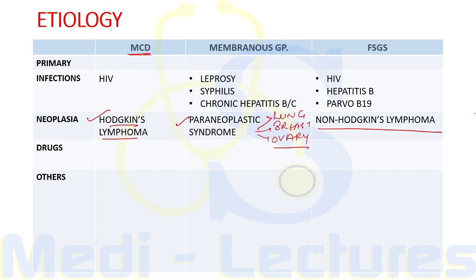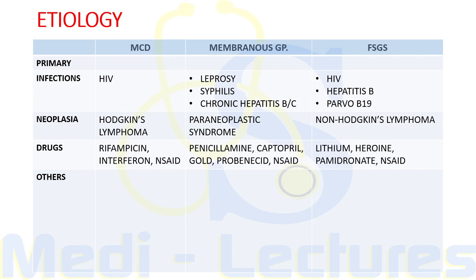Non-Hodgkin's lymphoma is associated with FSGS. Coming on to drugs: NSAIDs can cause any type of nephrotic syndrome — minimal change, membranous, or FSGS. Other drugs associated with minimal change disease are rifampicin and interferon.